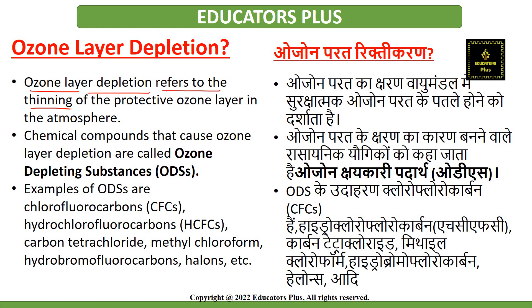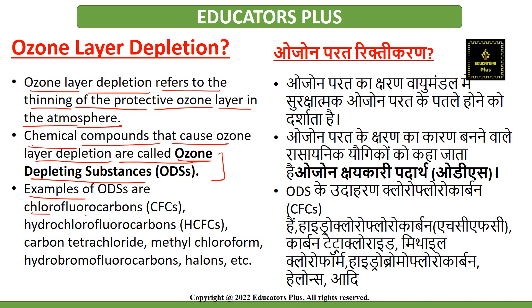Ozone layer depletion refers to the thinning of the protective ozone layer present in the atmosphere. This happens because certain chemicals — called ozone depleting substances, or ODS — come into contact with ozone and destroy it. Examples of ODS include CFCs (chlorofluorocarbons), hydrochlorofluorocarbons, carbon tetrachloride, methylchloroform, hydrobromofluorocarbons, and halons.